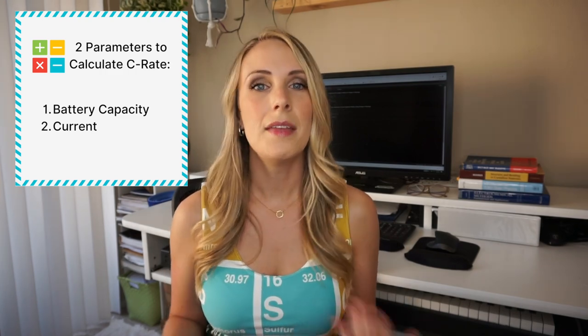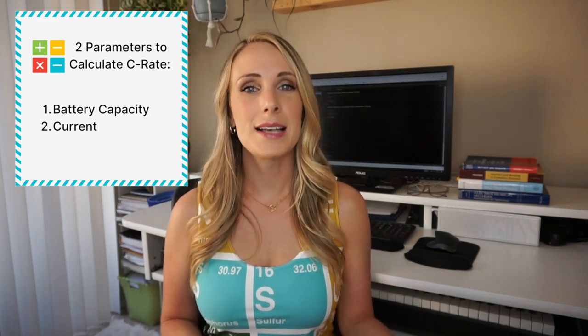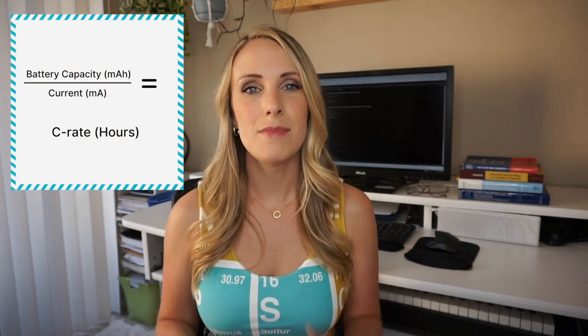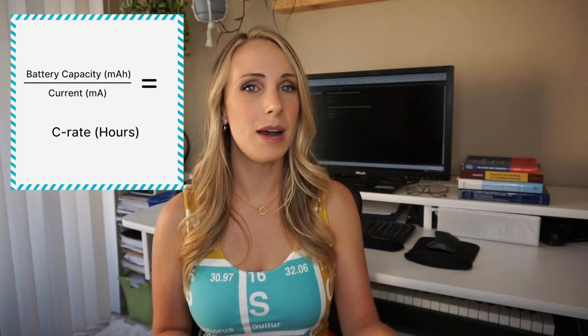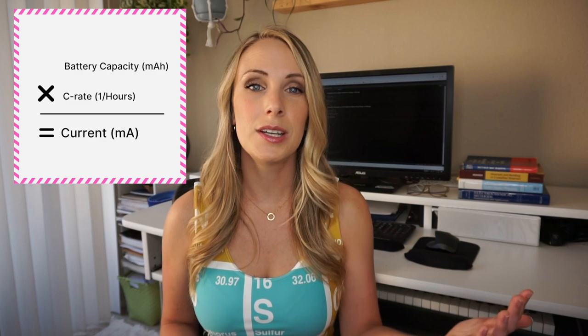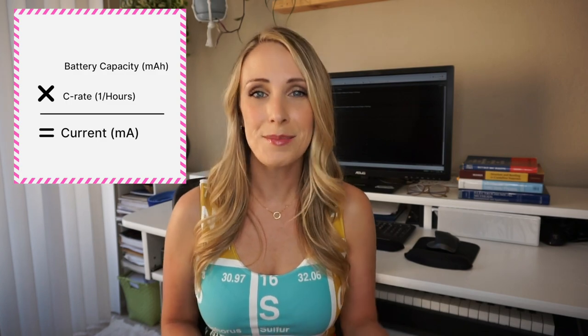Now you can see what C-rate is and why it's so important, so let's get into the math and do the calculations. To calculate C-rate you need two parameters: the battery capacity and the current — this could be either for charge or discharge. To calculate the C-rate, you simply divide the current by the battery capacity, and make sure the units are correct: if you use milliamp hours, use milliamps; if you use amp hours, use amps. To calculate the current from the C-rate, you flip the equation and multiply the battery capacity by the C-rate, giving you the current in milliamps or amps.